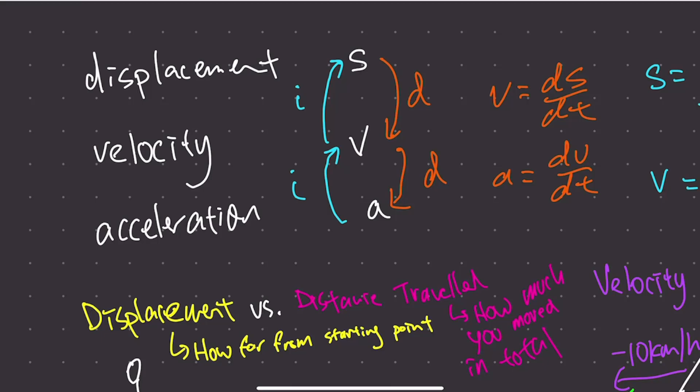Hello guys, I'm Ryan, and in this video we're going to cover IB Calculus Chapter 5.9, which is kinematics. For this chapter, only the AASLs, AAHLs, and AIHLs need to know this. AISLs, you do not need to know this.